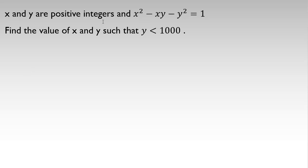x and y are positive integers and x² - xy - y² = 1. Find the value of x and y such that y is less than 1000.